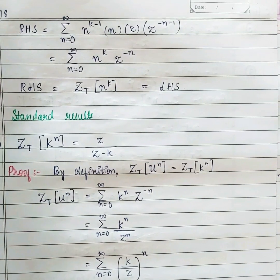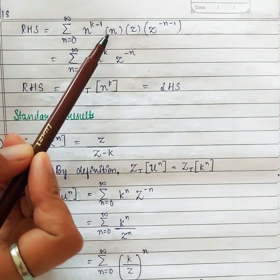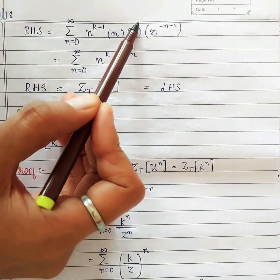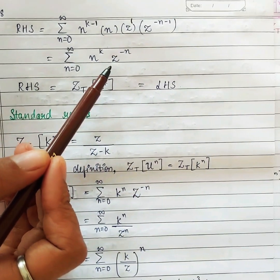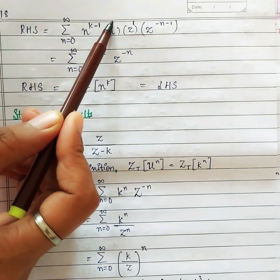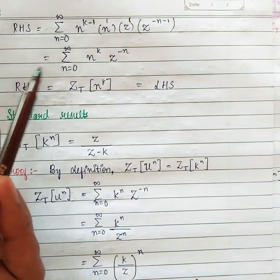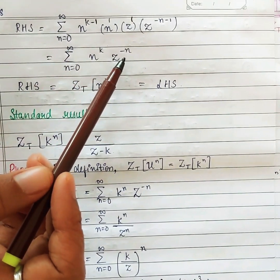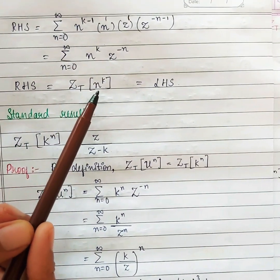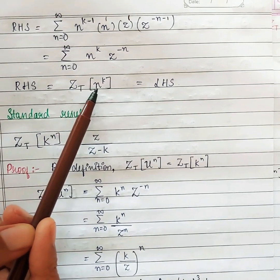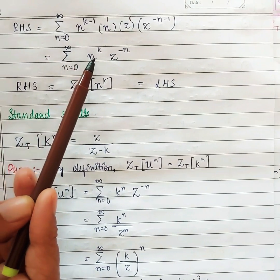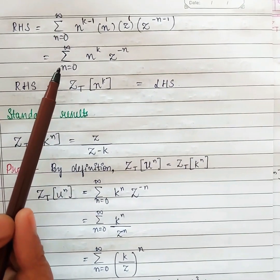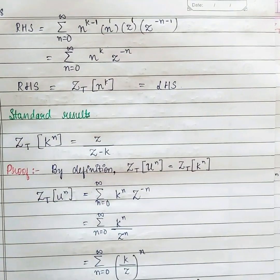Grouping terms: we had minus z out front, the minus from differentiating gives plus n, and z times z^(−n−1) gives z^(−n). Also, n^(k−1) times n^1 gives n^k, with the plus 1 and minus 1 cancelling in the exponent. So we get summation n=0 to infinity of n^k times z^(−n), which is exactly Z{n^k}. We proved from the right-hand side.